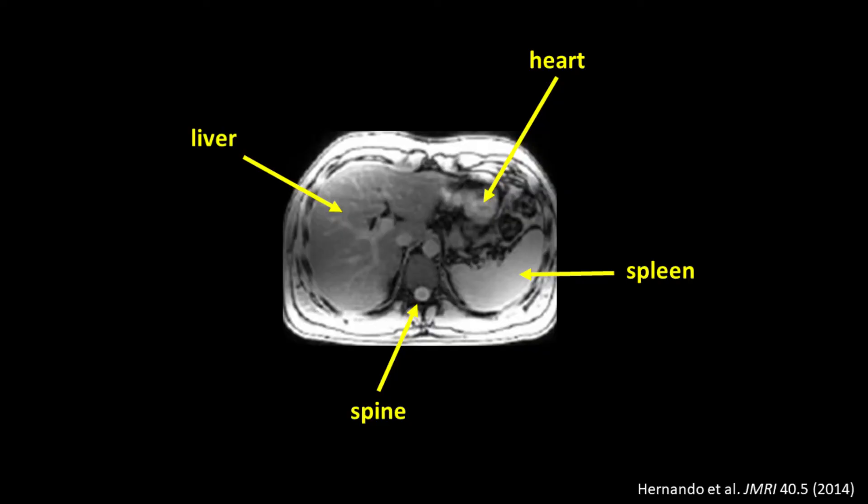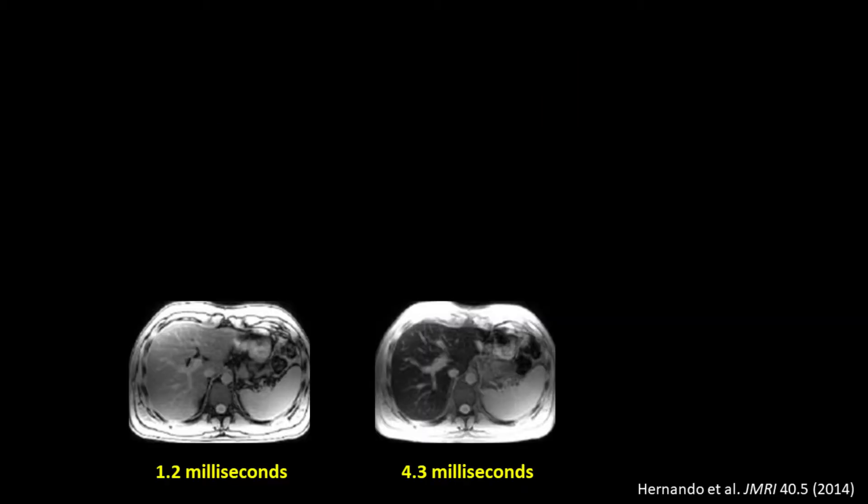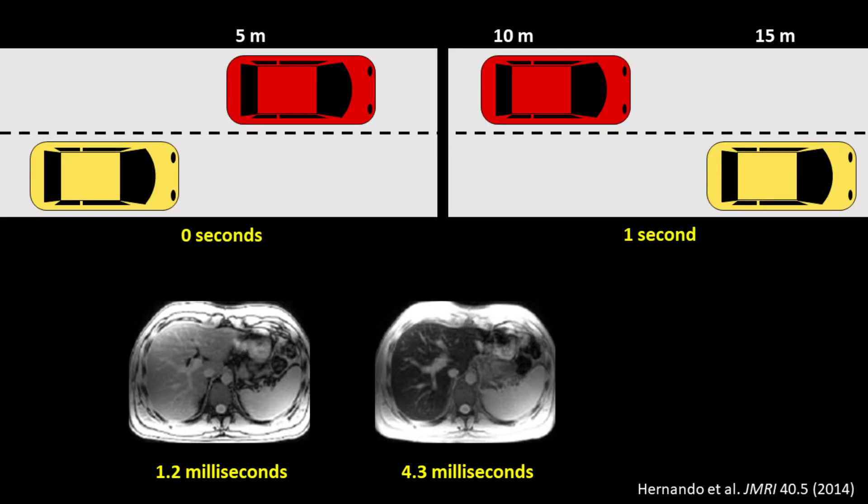Interestingly, a technique called MRI R2 star mapping works in exactly the same way. MRI is a medical device that can take pictures of the inside of the body. One of the features of MRI is that during a single scan it can produce multiple pictures of the same organs in quick succession, similarly to the pictures of the two cars going by.